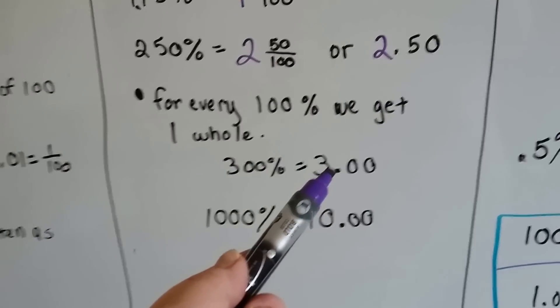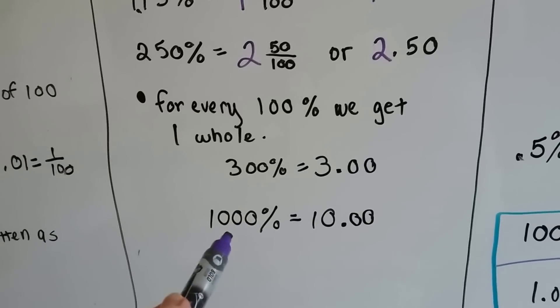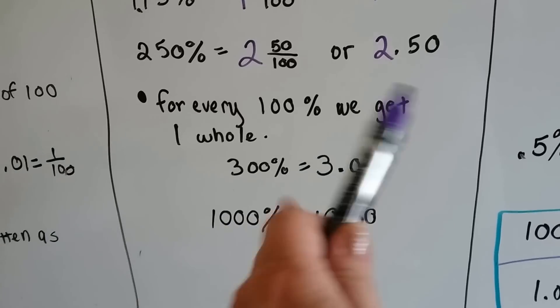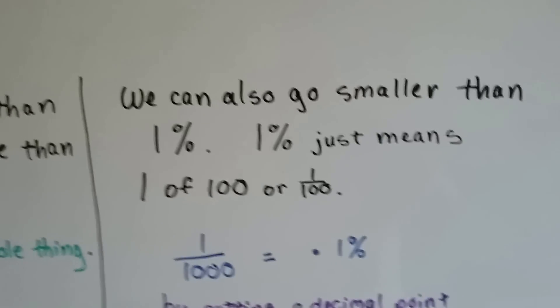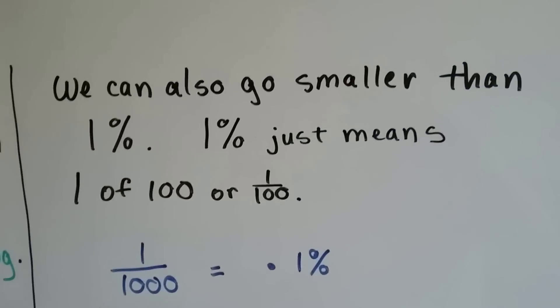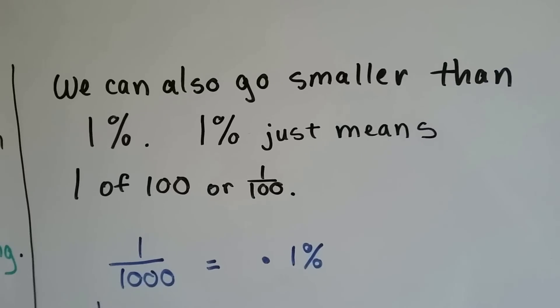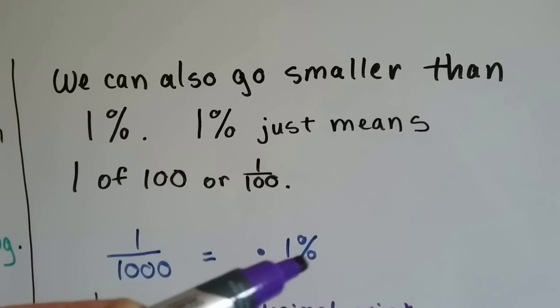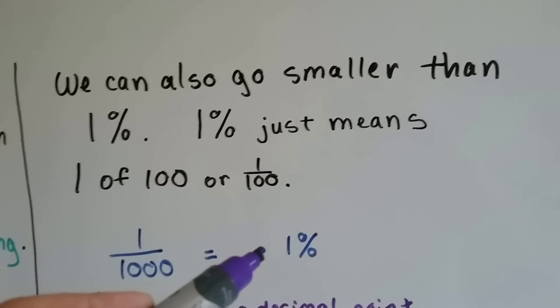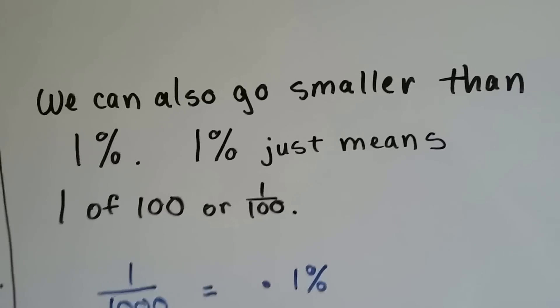Three hundred percent is three whole. A thousand percent is ten whole. It's like there's an invisible decimal point there and we take away the percentage sign. We can also go smaller than one percent. One percent just means one of a hundred, or one hundredth. One one-thousandth means point one percent — so we put a decimal place in front of the percentage number.